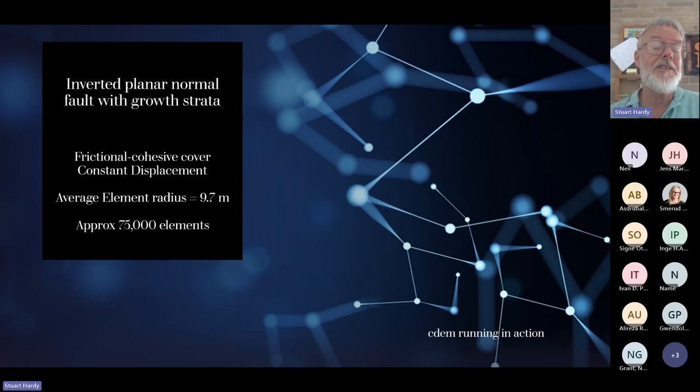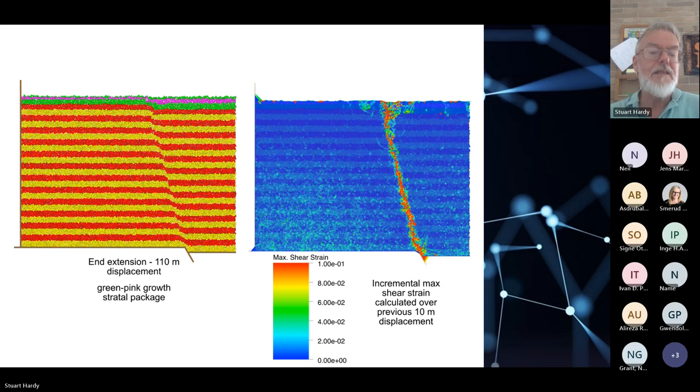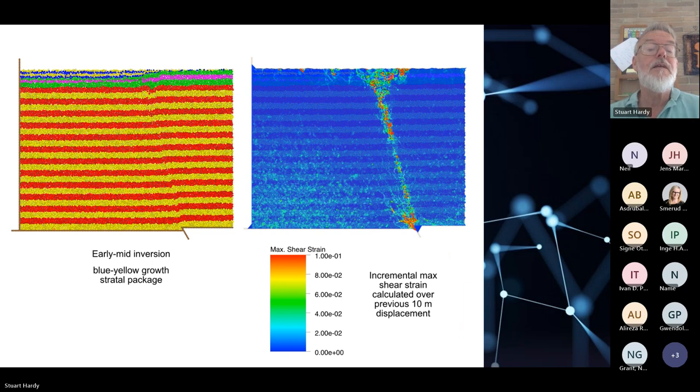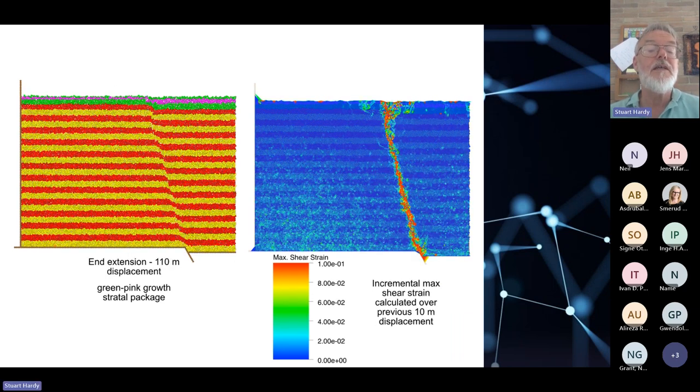Now, everything that goes down doesn't necessarily stay down. So inversion, and it's a bit of a flavor of the month in certain areas as well. We're going to look at inverted planar normal fault here with growth strata. So things can be time varying, as in the sense of displacement can change. There could be a pause as well. It's a frictional cohesive cover. The fault itself is just a planar fault. So it's constant displacement at depth. Again, quite high resolution around 10 meters. And about 75,000 elements in this instance. Here are the two examples. This is 110 meters displacement, end of the extension. So there's not much extension, but there is growth. You can clearly see thickening across this fault, which becomes steep towards the Earth's surface. And this is the incremental shear strain over the previous 10 meters. We see things are fairly predictable. There's a little bit of antithetic faulting in here due to the fact that that fault is steepening. And this is early to mid inversion.